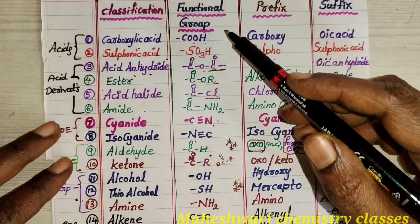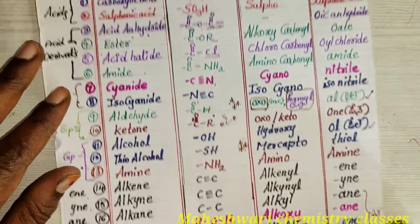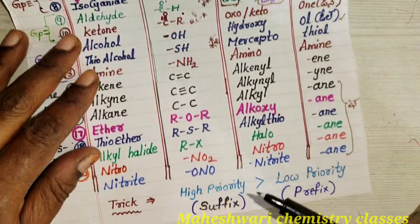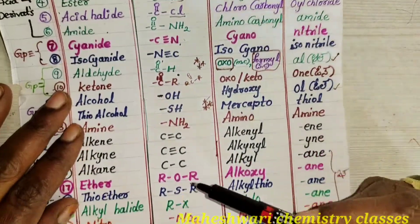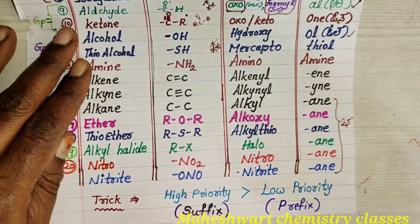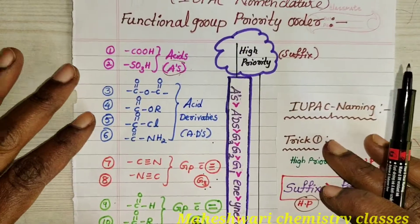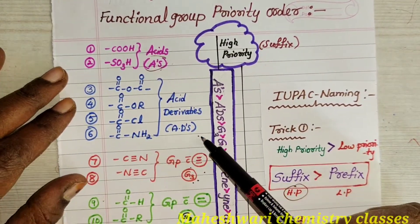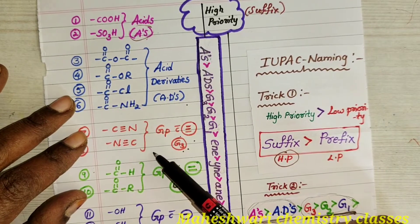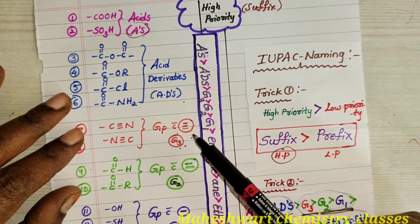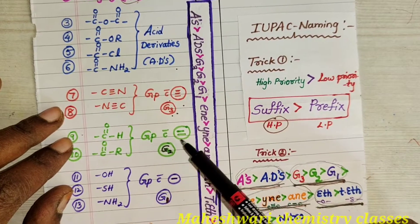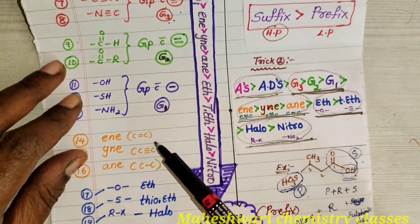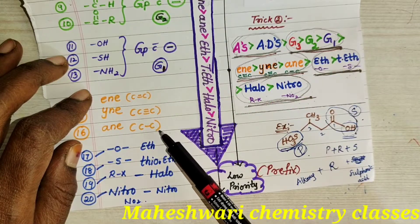Here is the trick box. From top to bottom, priority decreases. The top functional groups — high priority groups — are used as suffixes. Low priority functional groups are used as prefixes. For acids: A. Acid derivatives: ADs. Cyanides and isocyanides: functional group with triple bond. Aldehyde and ketone: functional group with double bond. Alcohol, thioalcohol, amine: functional group with single bond. Then ene, yne, ane.